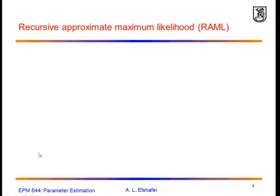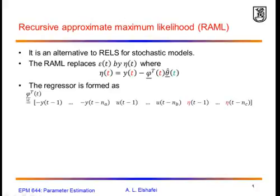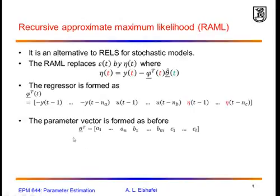An alternative approach in applying the recursive least squares is to redefine the estimated noise sequence as eta instead of epsilon. The difference here is that instead of using the previous value of the estimate theta, we use the current value of theta to estimate the unmeasured noise sequence. In that case the regressor consists of the Y measurements, the input measurements, and the eta values calculated as above. The parameter vector remains the same, and we use the same recursive least squares equations to estimate the parameters.